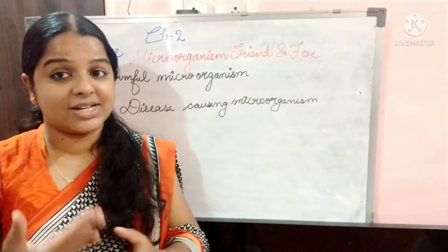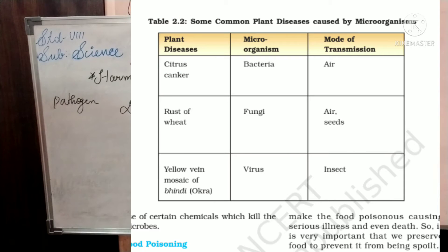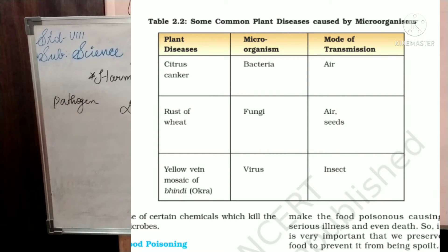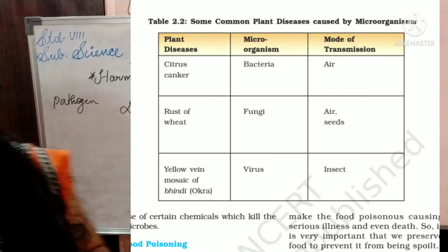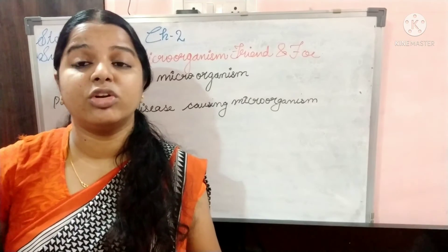In plants also, microorganisms cause diseases. You can see the tabular column — citrus canker occurs in citrus fruits like oranges and lemons, caused by bacteria, transmitted through air. Rust of wheat is caused by fungi, transmitted through air and seeds. Yellow mosaic in lady's finger is caused by a virus, and insects are the mode of transmission.